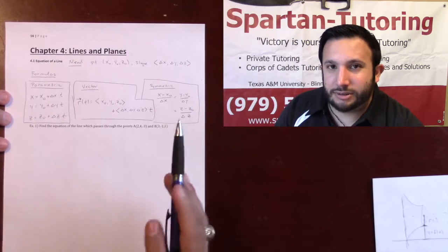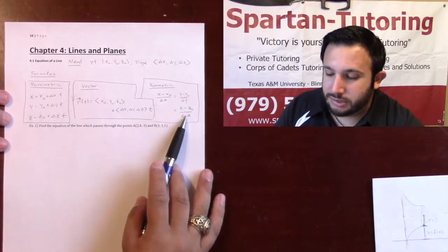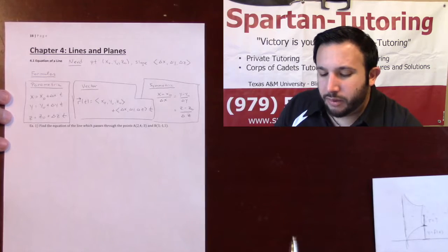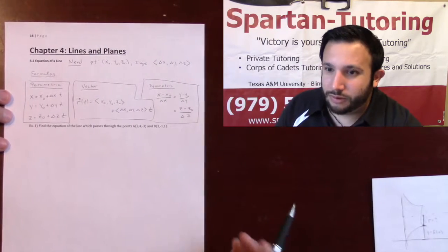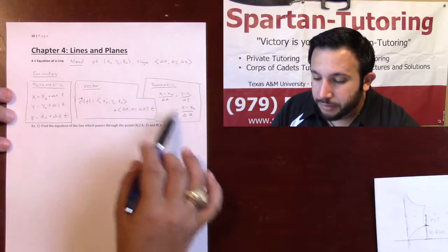And all these t's need to equal each other, hence t equals t equals t. So that's the way that I remembered it, and that's actually where it comes from. That's your symmetric.